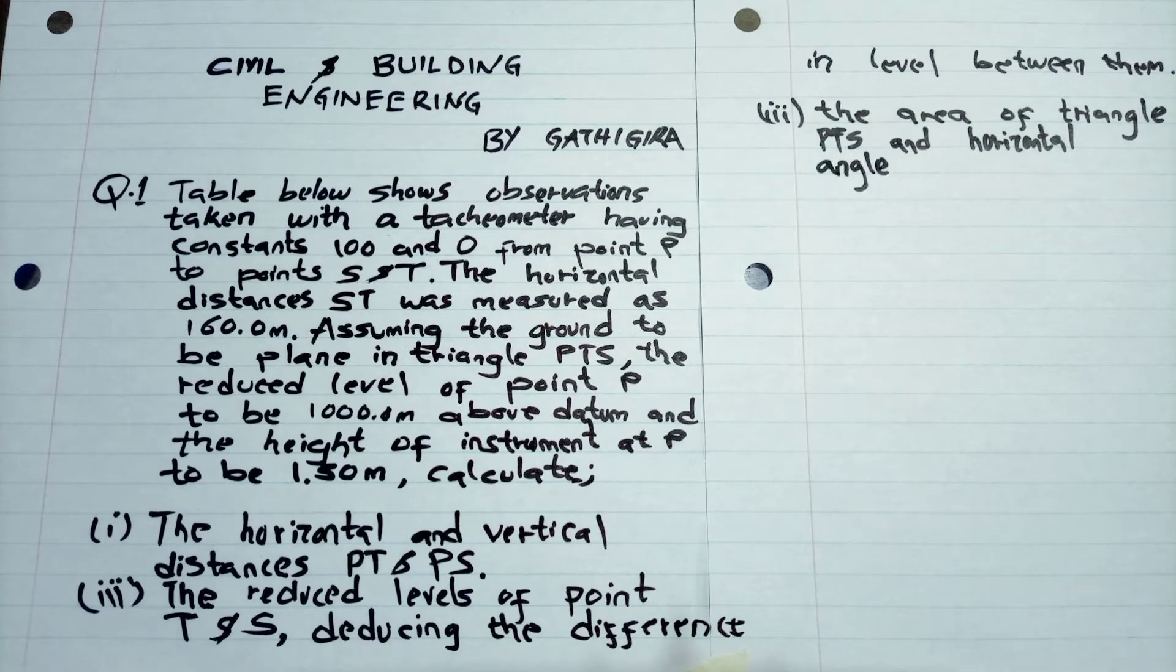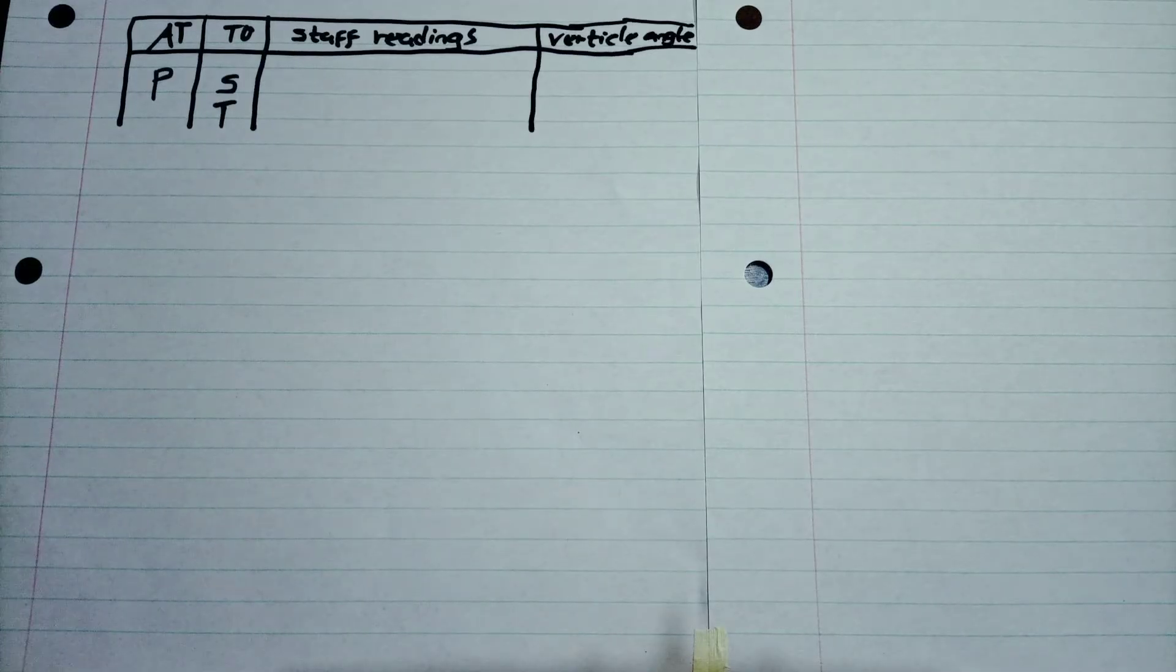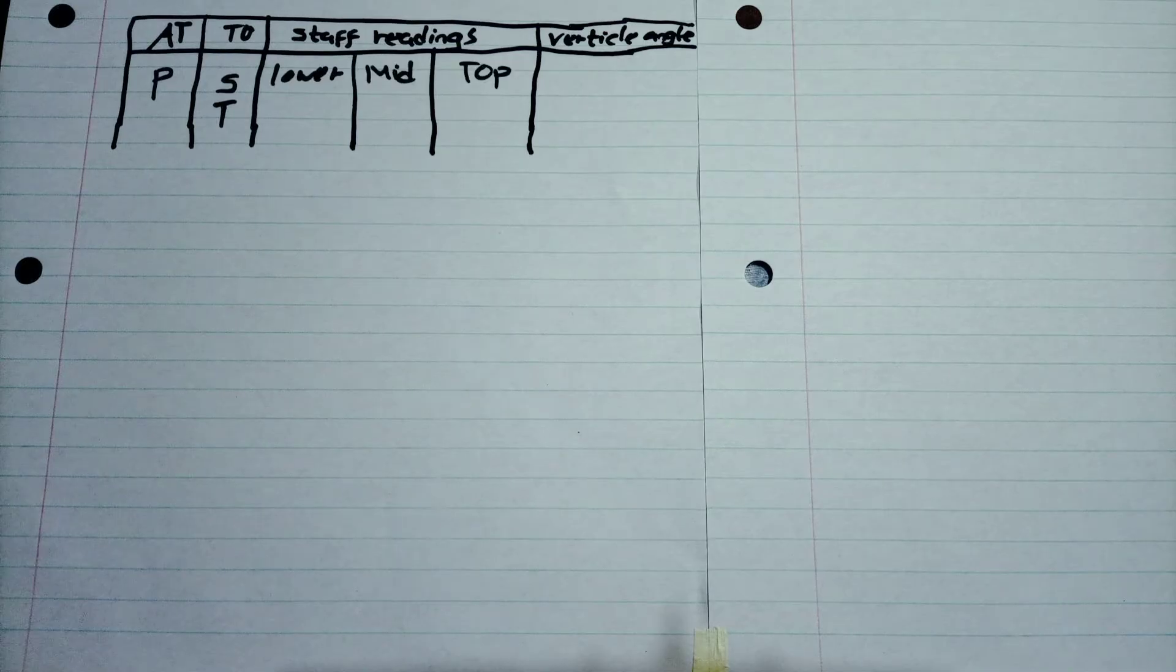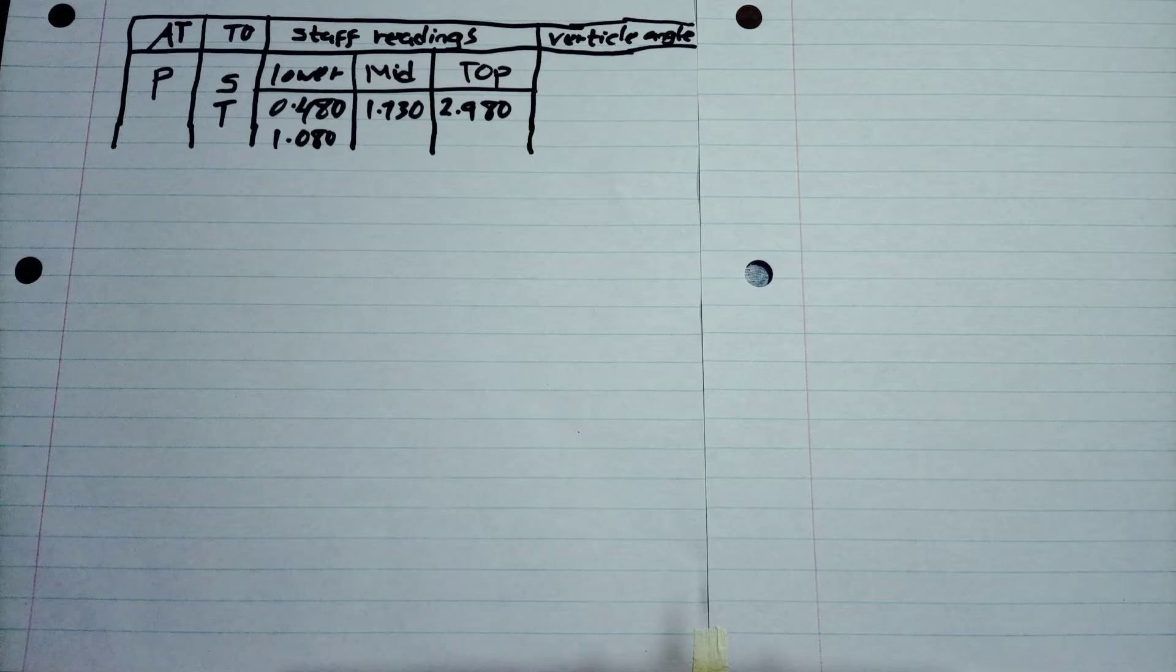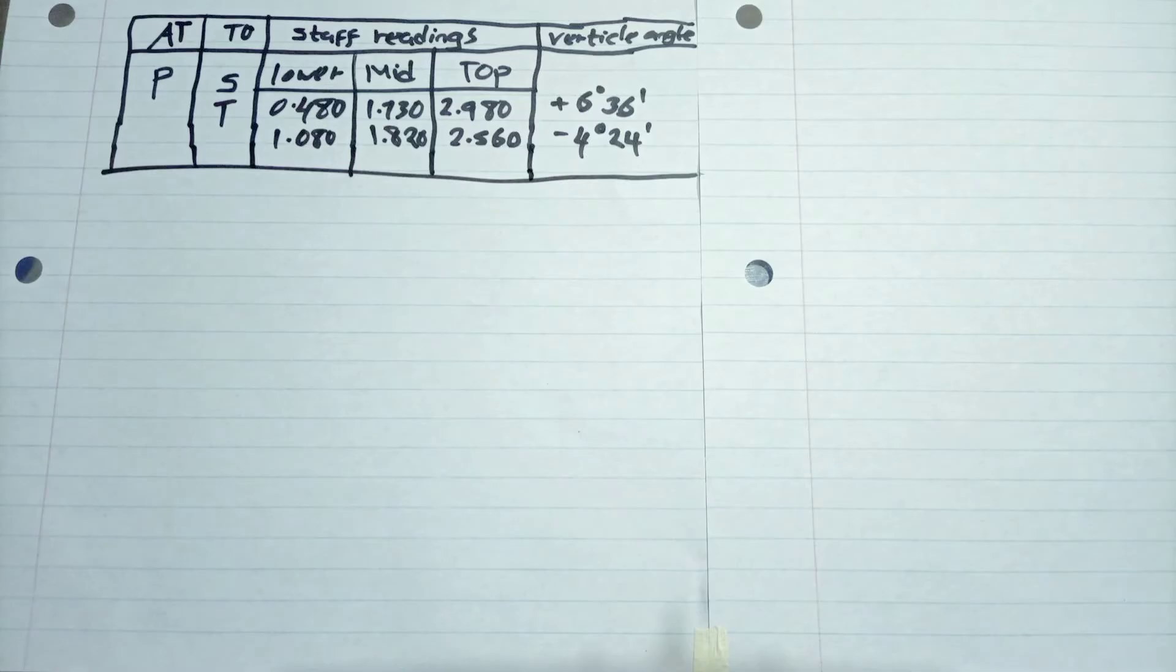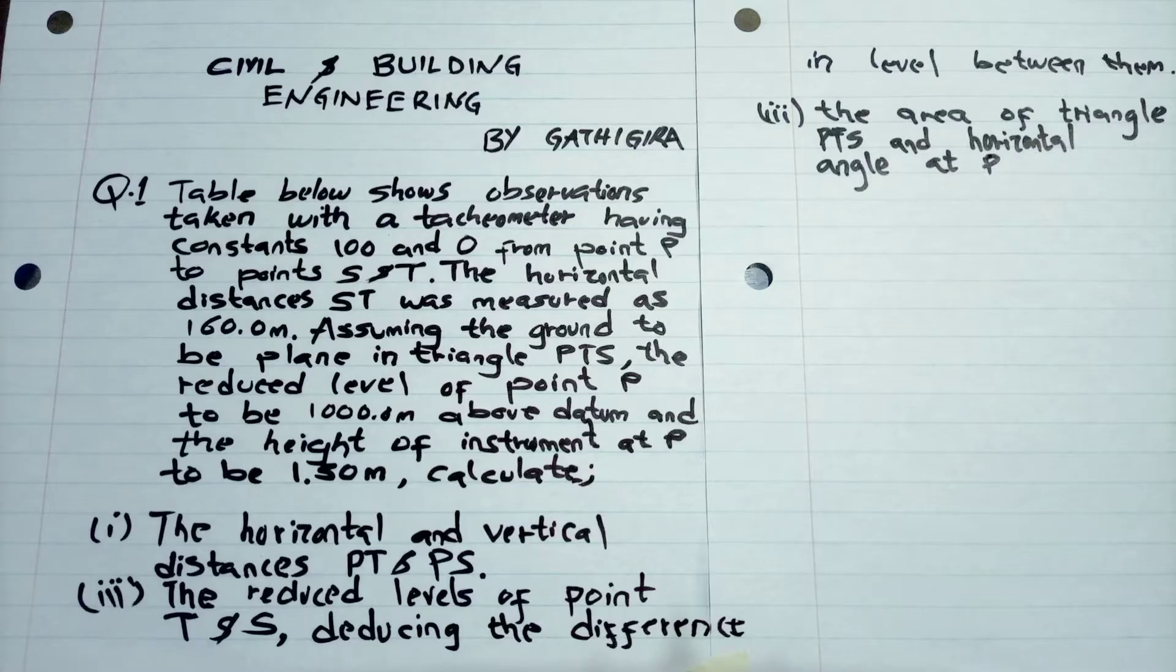So first of all, we are going to look at the table. From station P to S and P to T, we have the lower readings, the middle and the top readings. Then lastly, we have the vertical angles. So those are the observations.